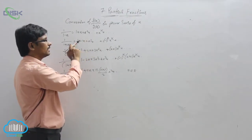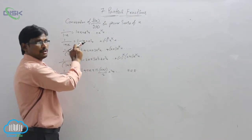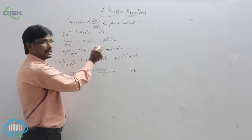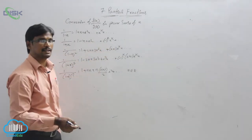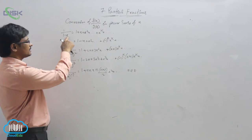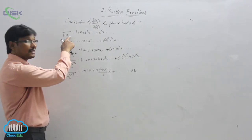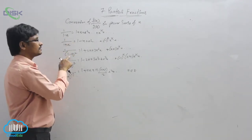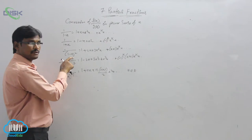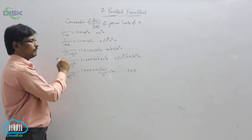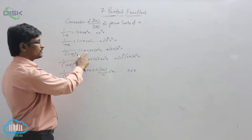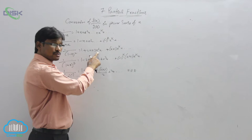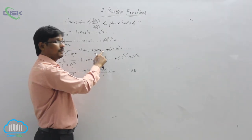Observe the difference between these two: here we have all positive signs, whereas here we have positive, negative, positive, negative — alternating signs. That's because one has (1 minus x) to the power 1 and the other has (1 plus x) to the power 1. If it is (1 minus x) to the power 2, the expansion is 1 plus 2x plus 3x squared plus 4x cubed, and so on.